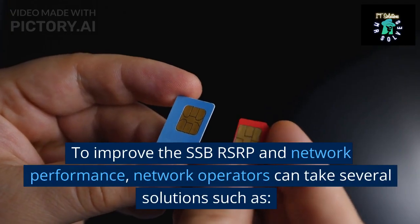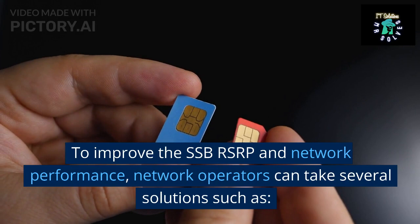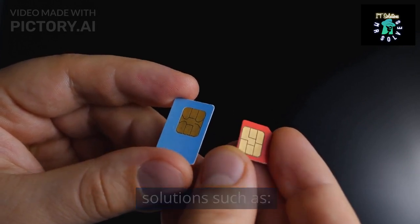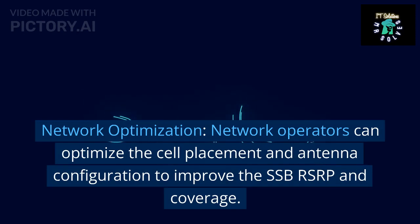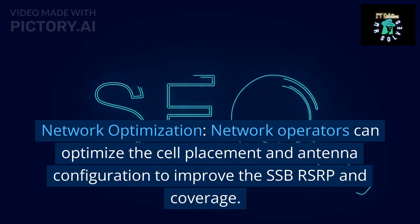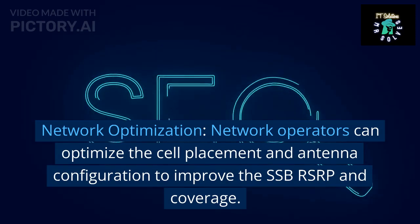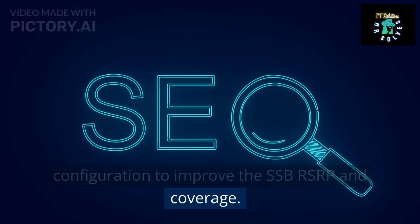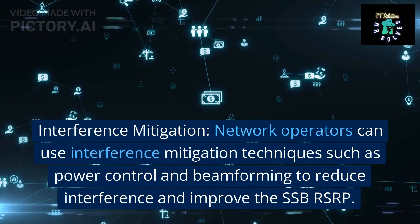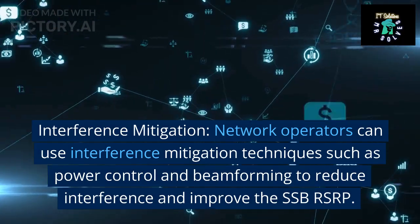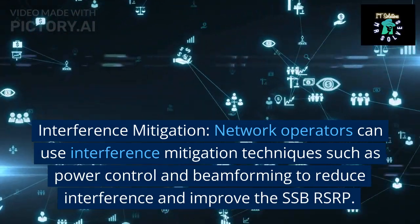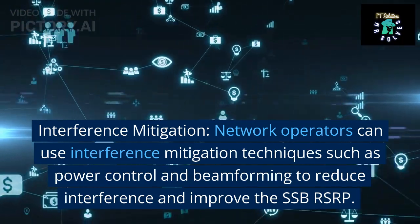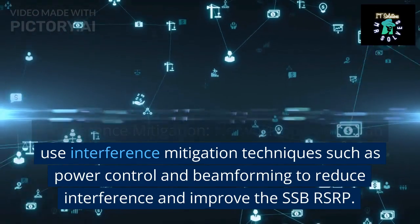To improve the SSB-RSRP and network performance, network operators can take several solutions. Network operators can optimize the cell placement and antenna configuration to improve the SSB-RSRP and coverage. Network operators can also use interference mitigation techniques such as power control and beamforming to reduce interference and improve the SSB-RSRP.